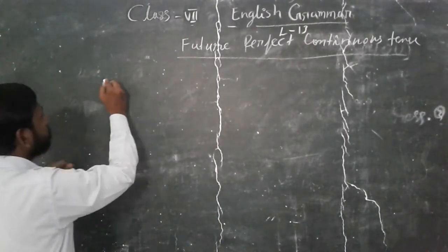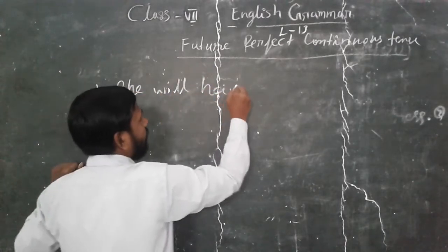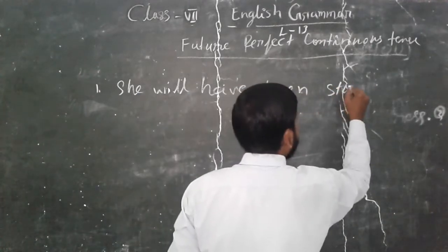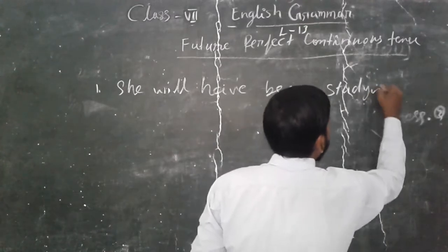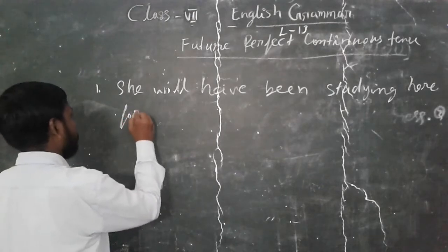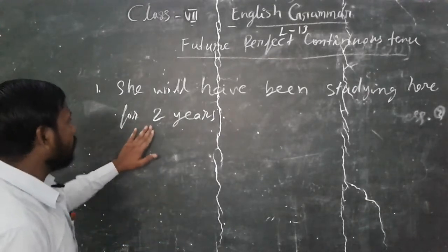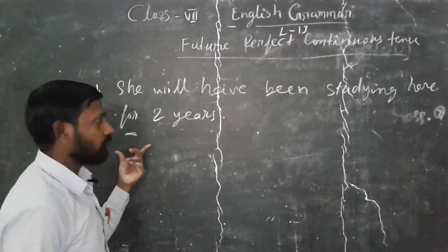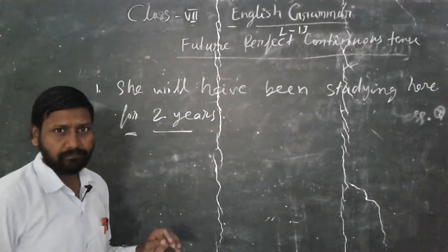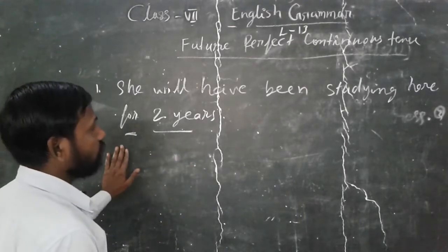Look at the book. Example number one: 'She will have been studying here for 2 years.' So 'for' means I have used 'for' here because it is 2 years — not a particular time, not a fixed time. So we use 'for' with a duration like 2 years.